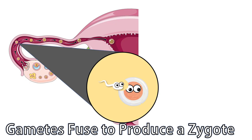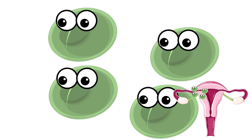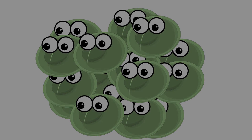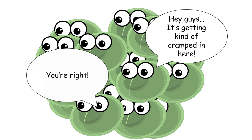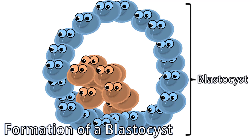Once fertilized, the zygote wastes no time and starts dividing, all while moving through the mother's reproductive tract towards the uterus. In only a few days, the zygote has divided into a mass of 12 cells, called the morula. The cells keep dividing, and by the fifth day after fertilization, there are 32 cells. Once it's too cramped within the egg's protective layers, the cell mass bursts out to form an expanded structure called the blastocyst. On the inside of the blastocyst is a fluid-filled cavity called the blastocele, which will expand to accommodate the entire developing embryo.